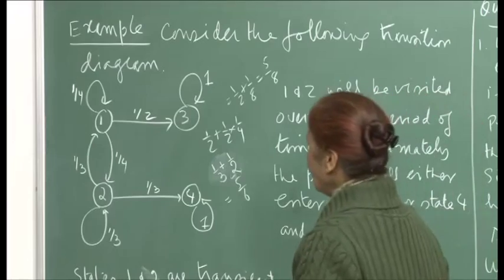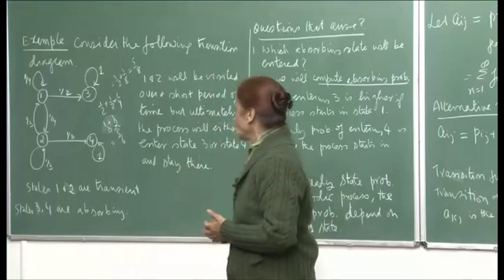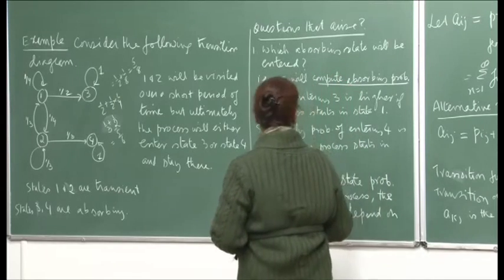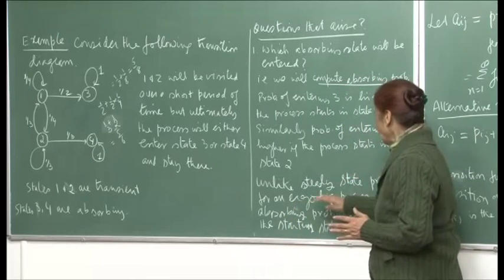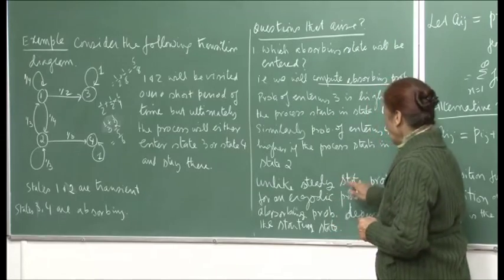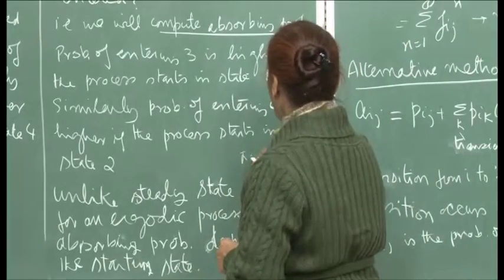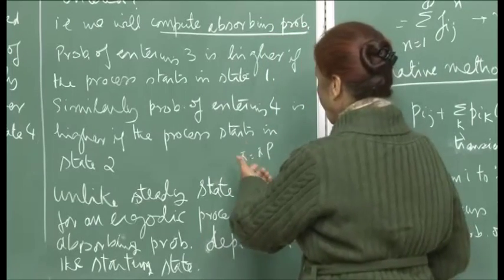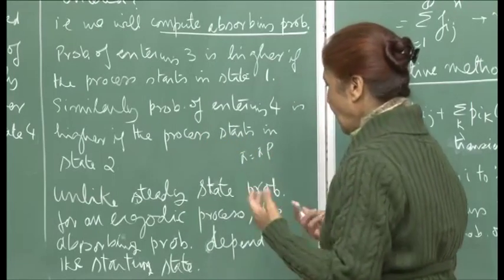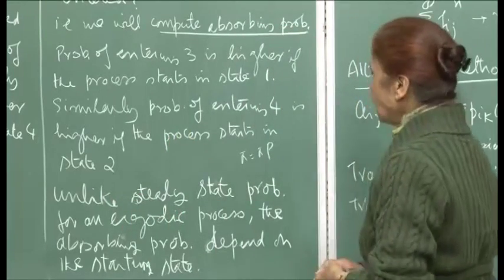In other words, we are making the case that absorbing probabilities are not independent of the starting state, whereas steady state probabilities were independent of where the system started. Unlike steady state probabilities for an ergodic process, the absorbing probabilities depend on the starting state. Steady states were independent of where the system started, so we would compute pi = pi*P and it did not matter where the system was, because all the rows of the matrix became identical. But in absorbing probabilities, it will depend on where you are starting.